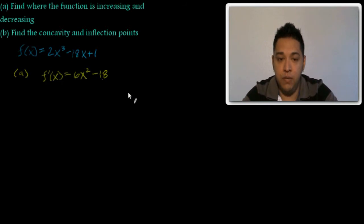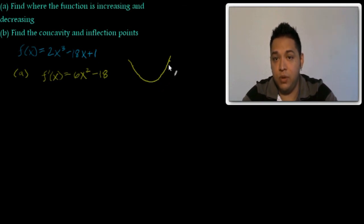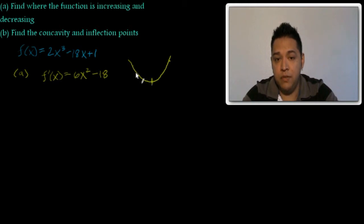Why am I taking the derivative for part a? Since I want to find where this function is increasing and decreasing, imagine a curve — I want to find the slopes at these points. The slope here would be decreasing and the slope here would be increasing. Furthermore, I want to set the derivative equal to 0 because I want to find the precise point where I change from a decrease to an increase. That point is where the first derivative equals 0.